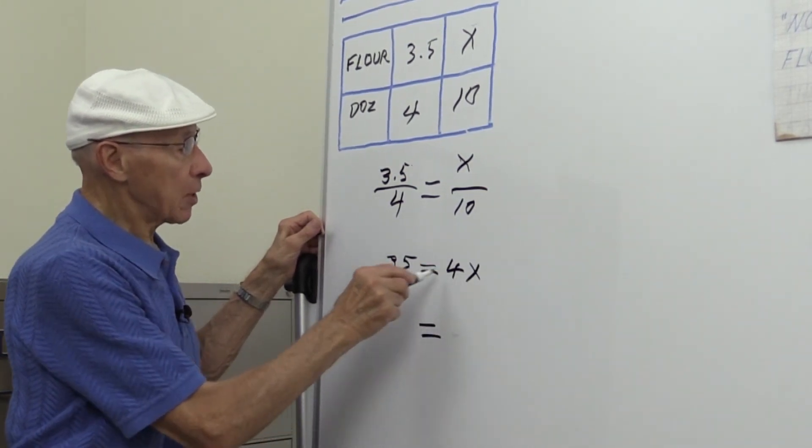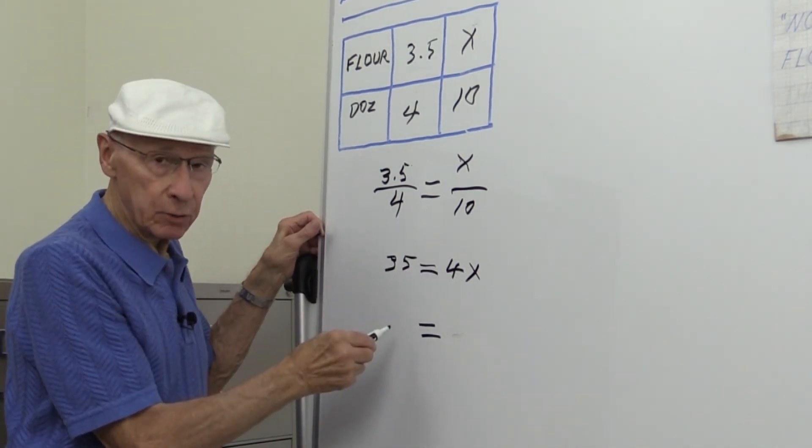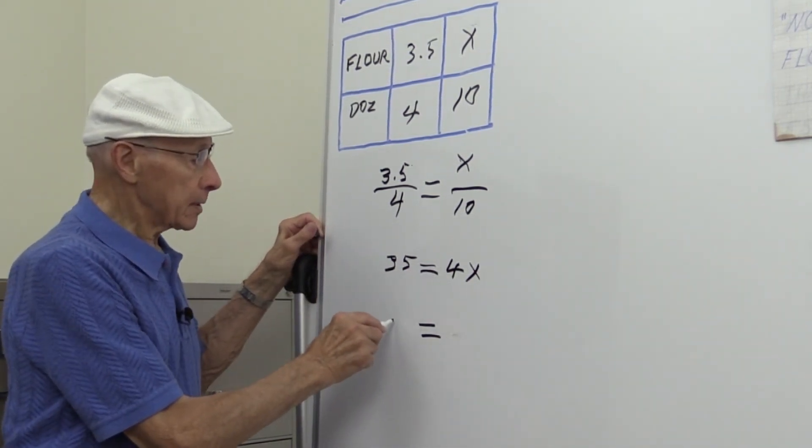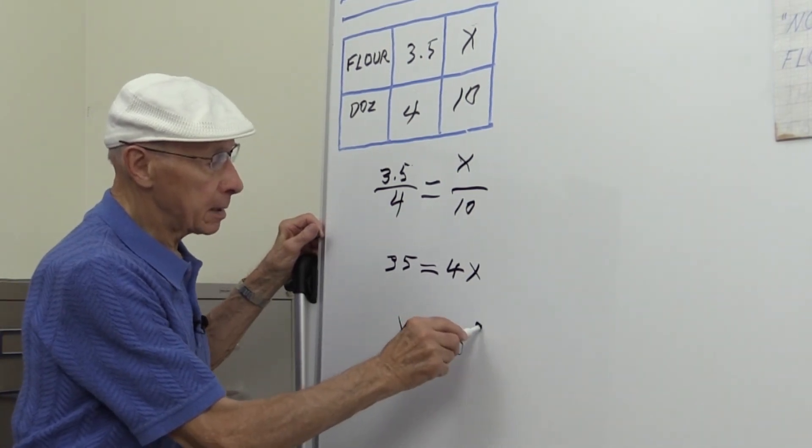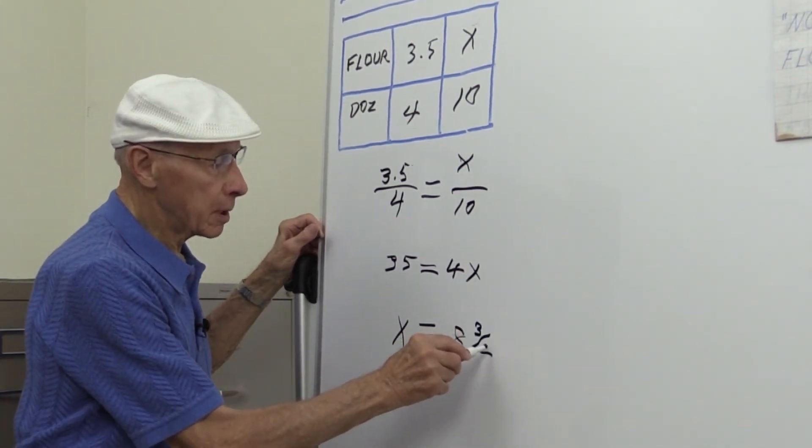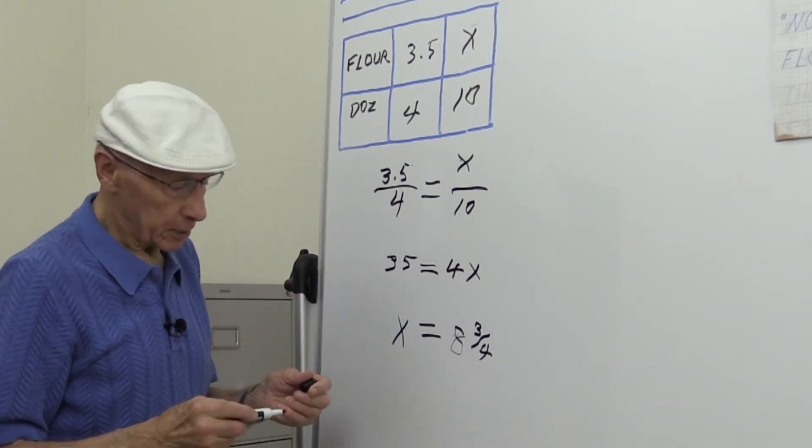And if we solve for x—and you should be able to know how to do this in your high school mathematics—so x is equal to, if you do the math, 8¾ cups of flour to make 10 dozen sugar cookies.